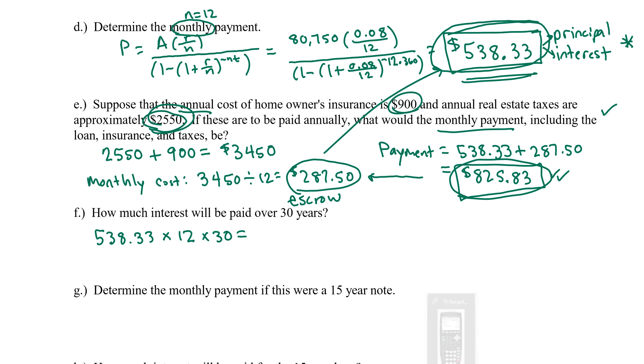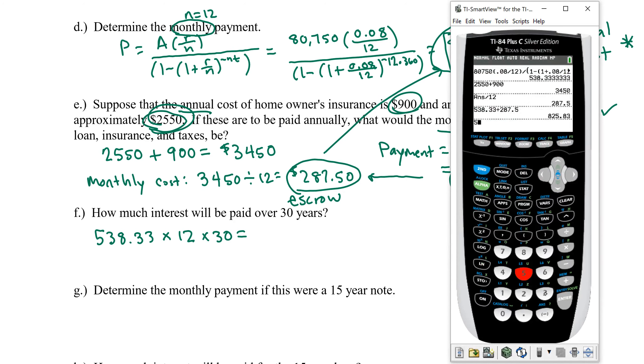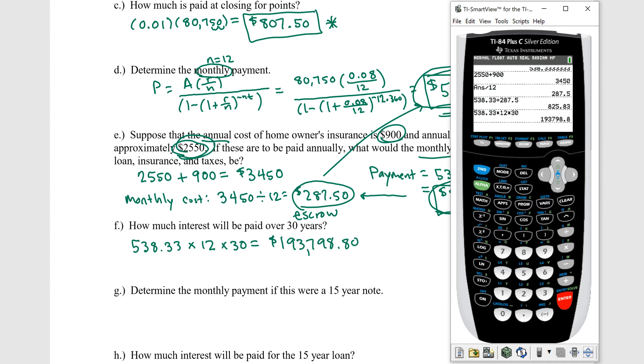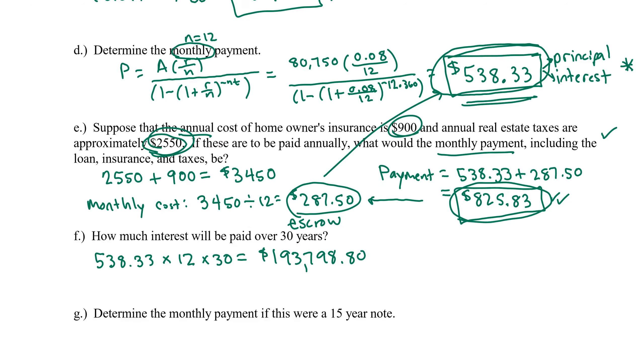So the total amount that we are paying $538.33 12 times a year for 30 years, we paid in $193,798.80. Do I remember that correctly? Looks good.